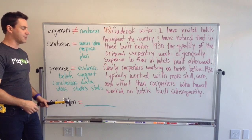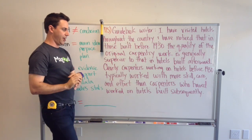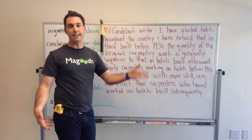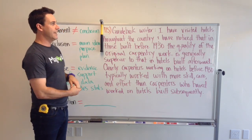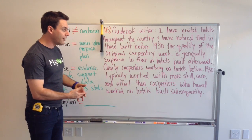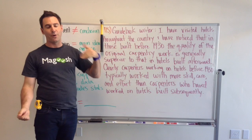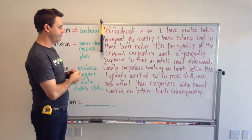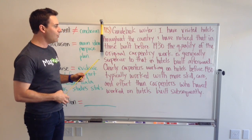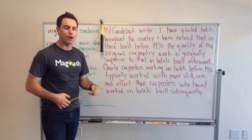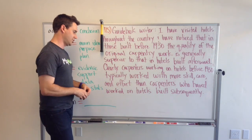The assumptions for this argument — and every argument has tons and tons of assumptions. For example, one assumption is that this writer has seen enough hotels before and after 1930 to make this conclusion. We'd also have to assume the hotels he saw are representative of hotels built in those periods, and that a guidebook writer can be a good judge of carpentry quality. We'd also have to assume that no one else affects the skill, care, and effort a carpenter puts in — like a manager, the building owner, or the people paying the carpenter.